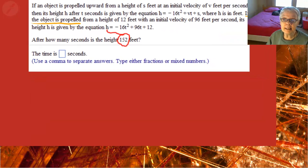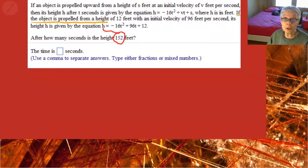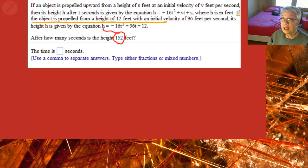The second sentence tells us which numbers to use for each of those characters. If the object is propelled from a height of 12 feet with an initial velocity of 96 feet per second, its height h is given by the equation h equals negative 16t square plus 96t plus 12.